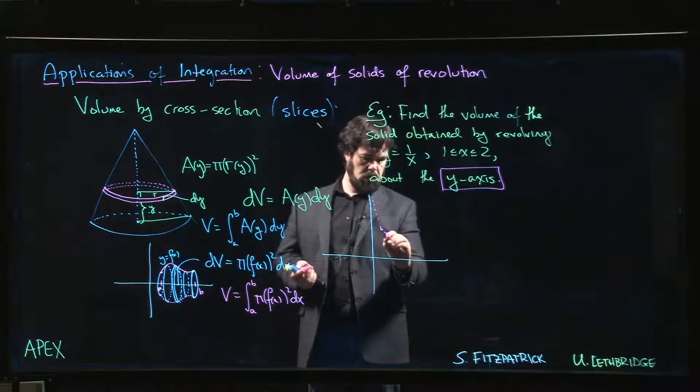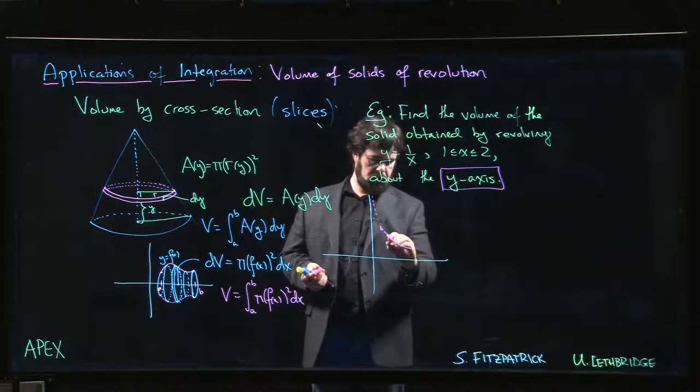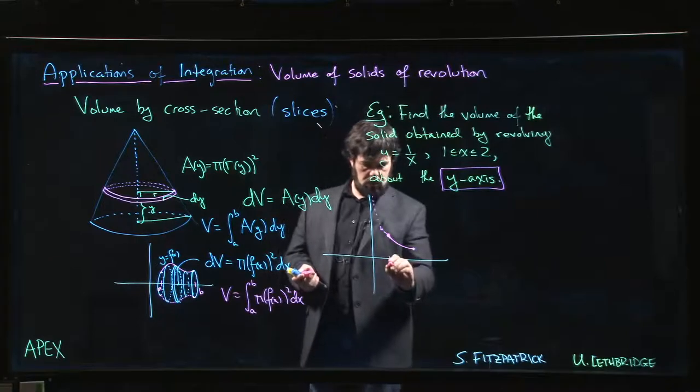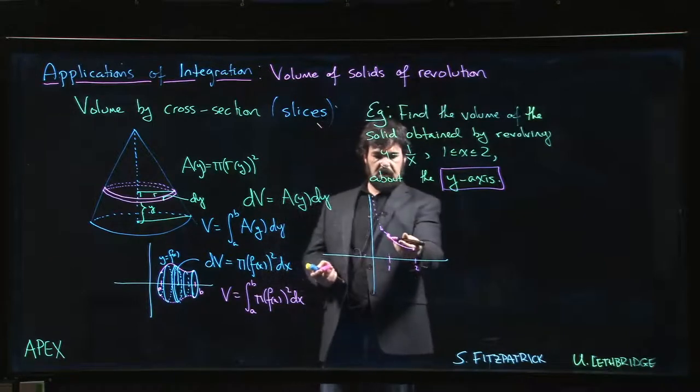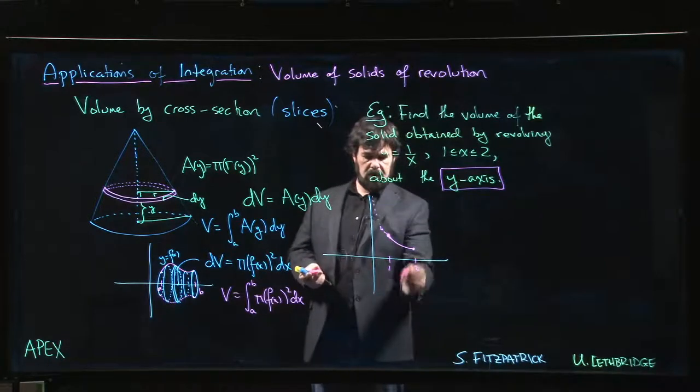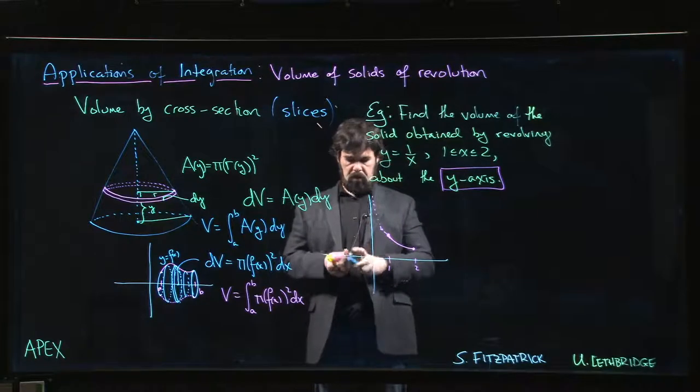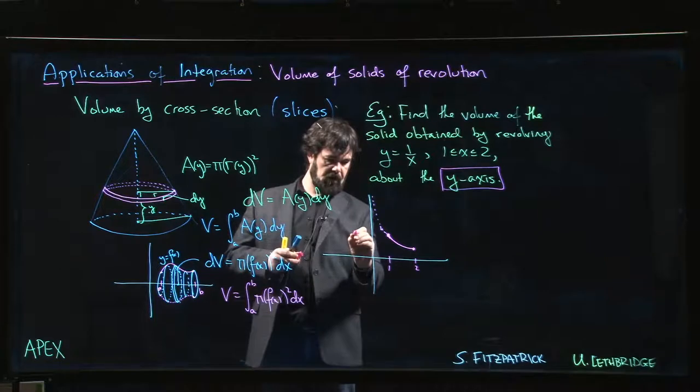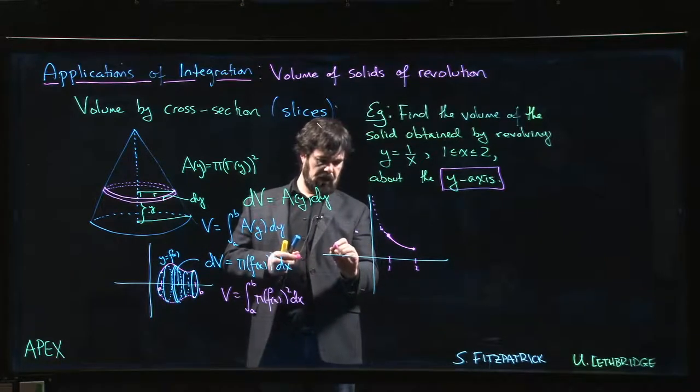We're still going to do the portion starting at x equals 1 going to x equals 2, so we get something like that. There's our curve. But this time instead of revolving it with the x-axis and going this way around, we're going to go this way around. We draw sort of a mirror of our curve over here on this side, starting at minus 1 and 1 and going down to minus 2 and a half.